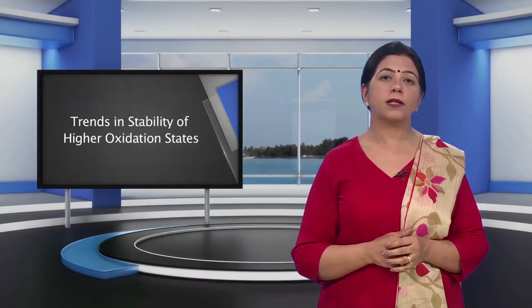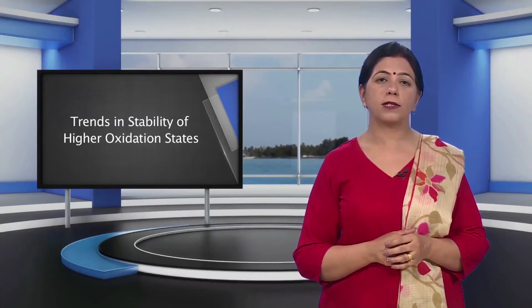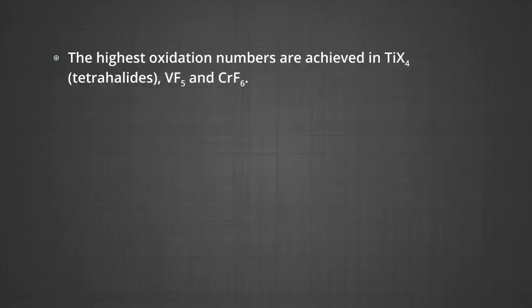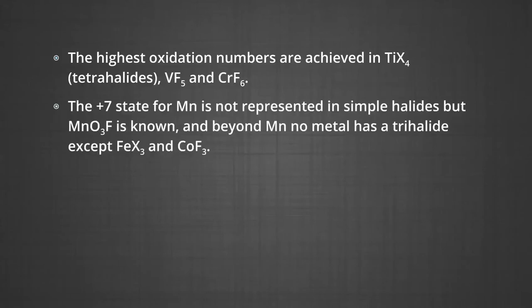Let us study the trends in the stability of higher oxidation states. The table shows the stable halides of the 3D transition metals. The highest oxidation numbers are achieved in titanium tetrahalide and vanadium pentafluoride. The +7 state for manganese is not represented in simple halides, but manganese fluoride trioxide is known. Beyond manganese, no metal has a trihalide except FeX3 and CoF3.